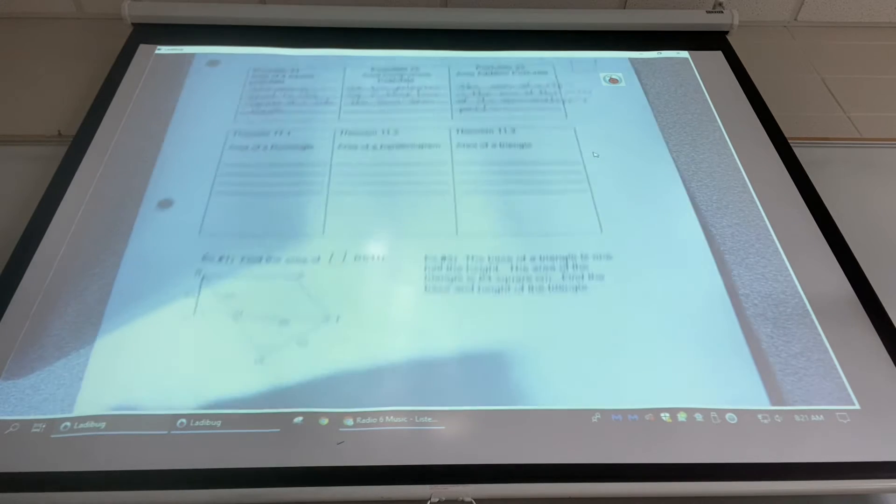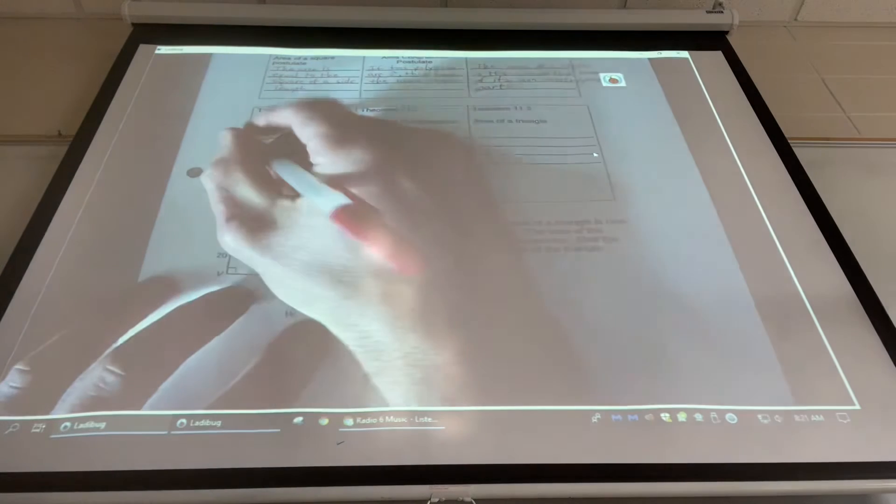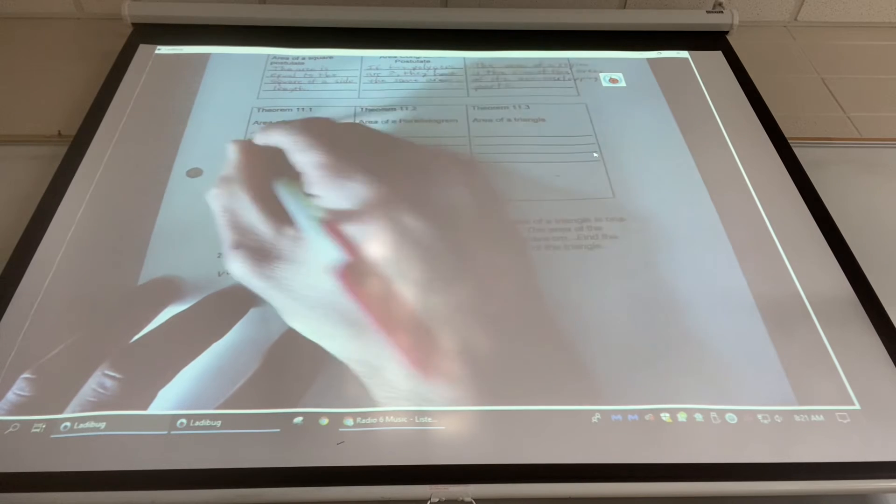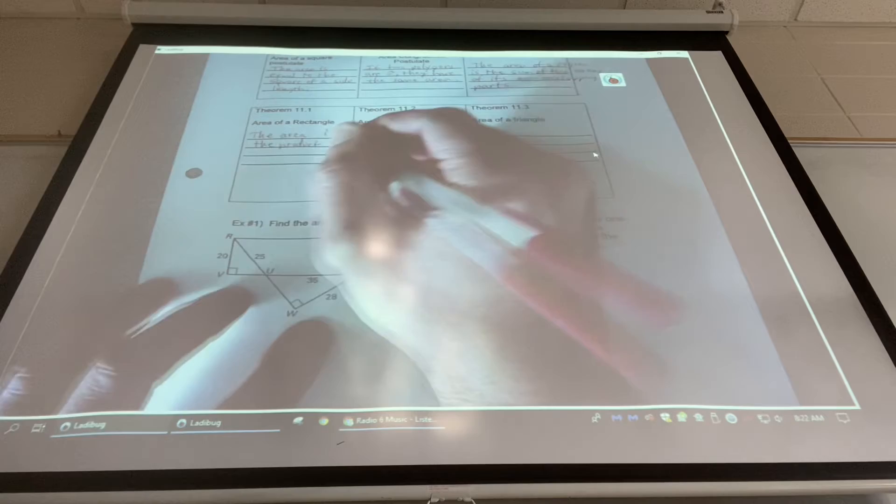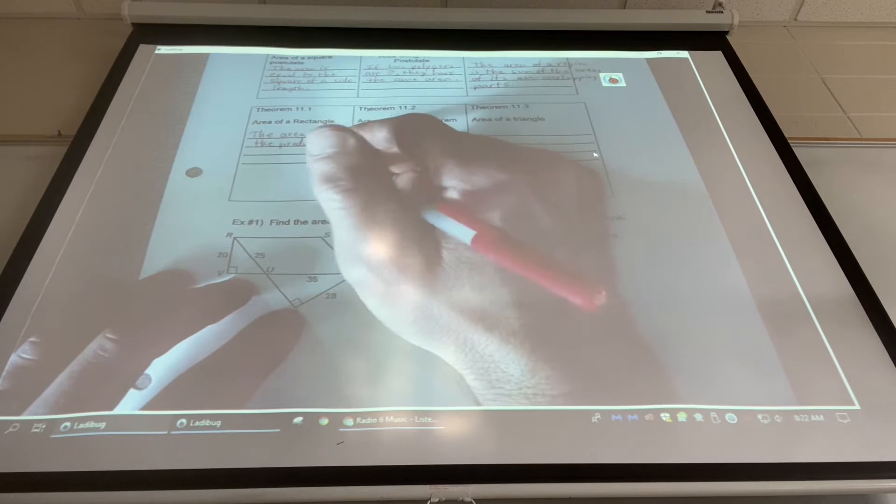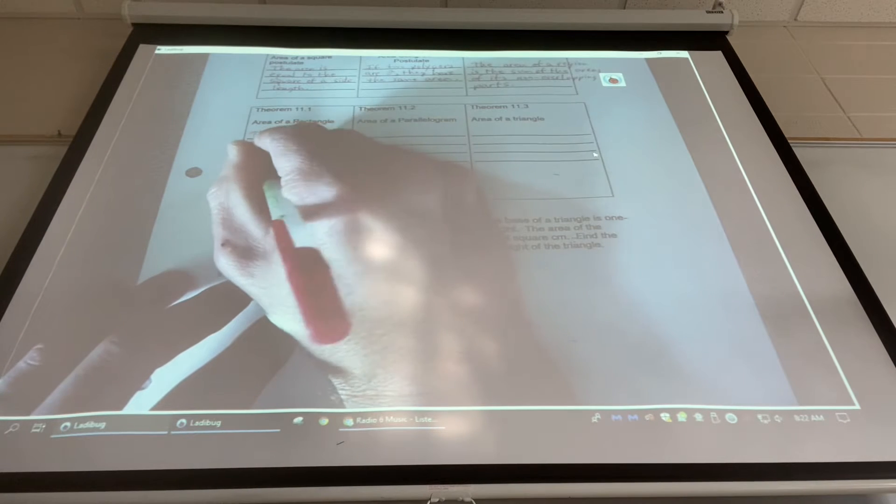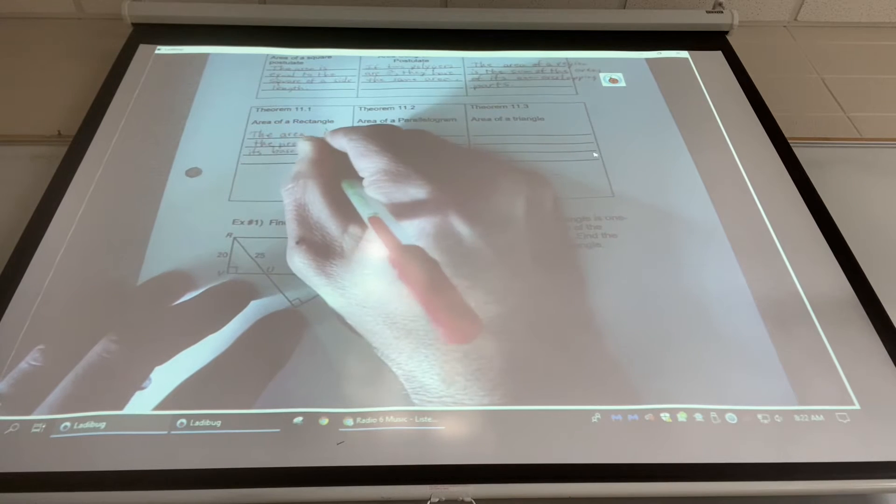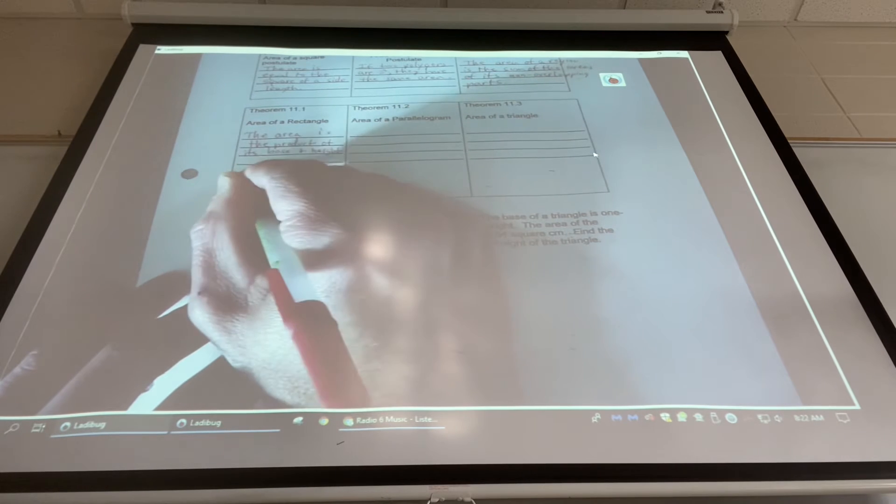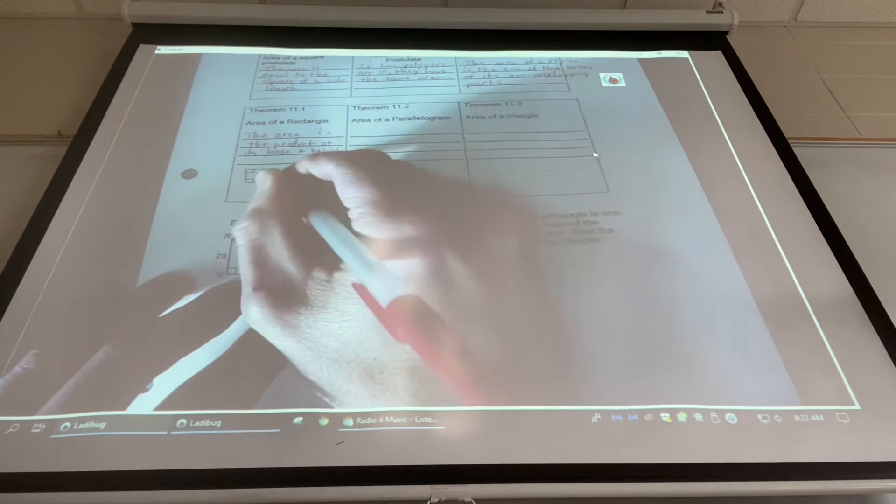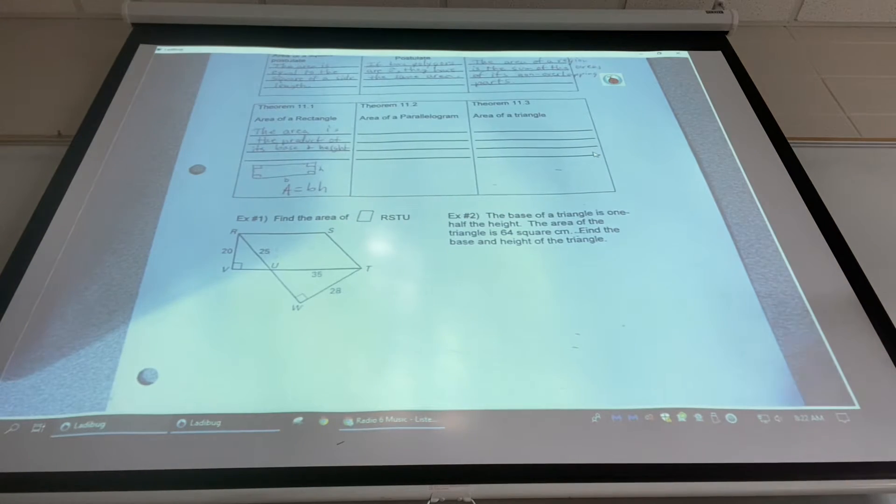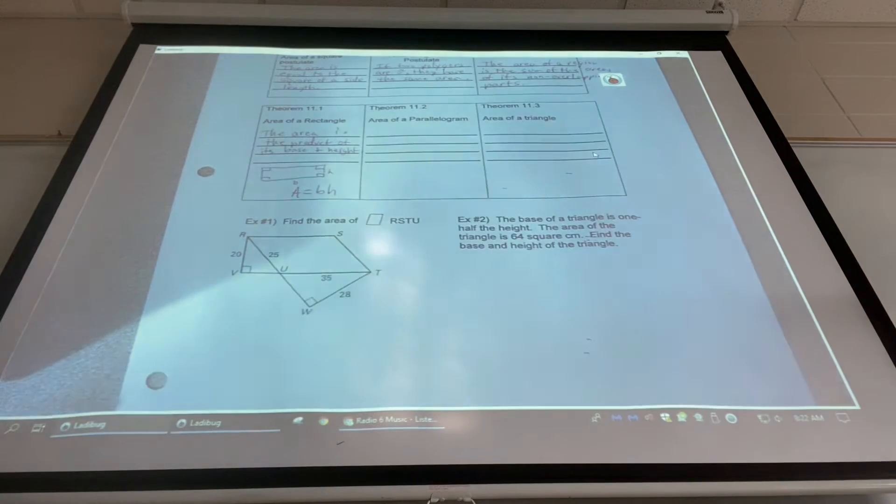Next up, area of a rectangle. I'm going to go ahead and call it base times height, because that kind of relates to triangles a little better. So the area is the product of its base and height. Let's draw a little picture. Rectangle, right? Base, height, bam, that's the area. And again, you could also do length times width.